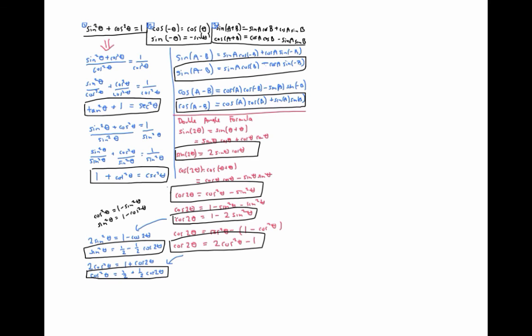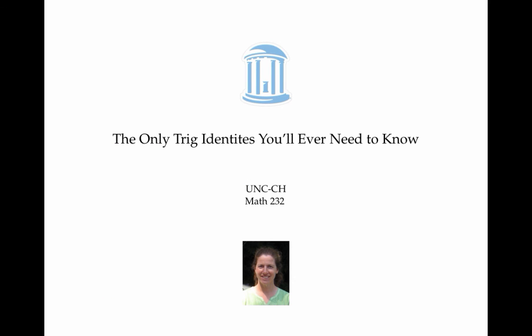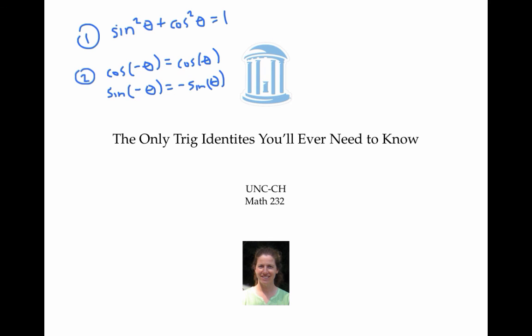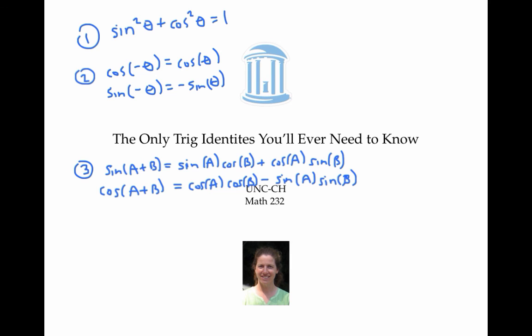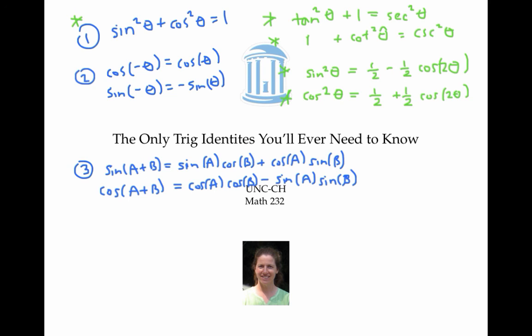While all these formulas are very useful, the ones of particular importance for techniques of integration are the Pythagorean identity and its various forms, and the last two power-reduction formulas. In this video, I told you my three favorite trig identities — the Pythagorean identity, the even and odd identities, and the angle sum formulas — and derived a bunch of other identities from them, including several that will be particularly useful as we do techniques of integration.